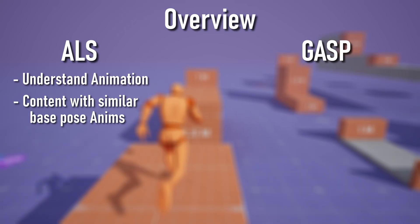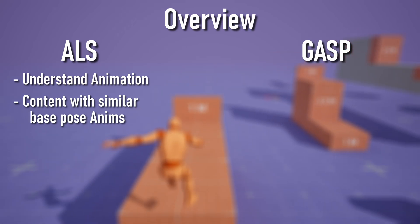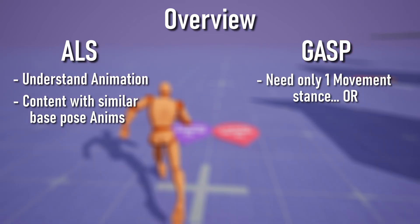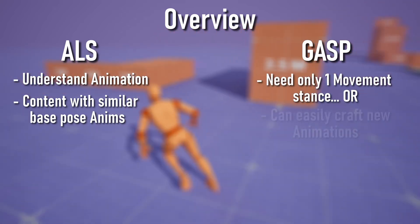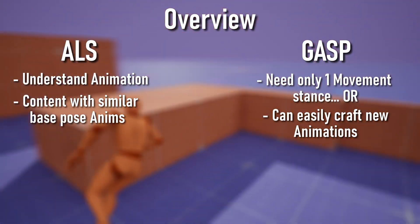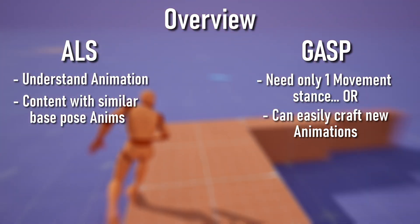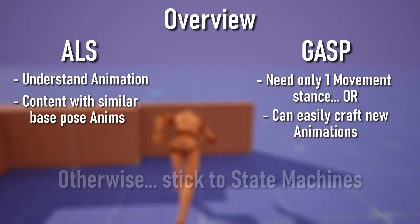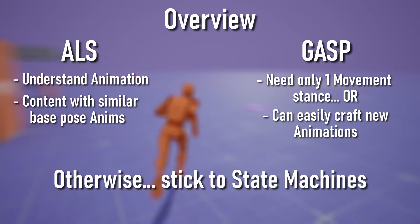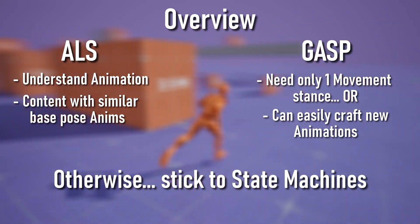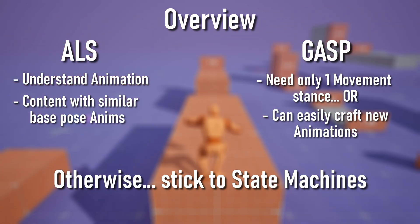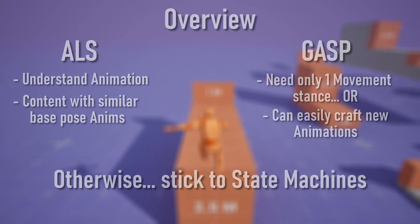Use GASP if you're happy with one movement set or if you're in a big team and can afford to mass produce animations. And use state machines in all other scenarios — they work, they're simple, and you can always add in climbing and inverse kinematic footing to it.